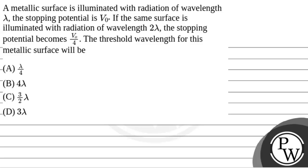Hello, let's read the question. The question says that a metallic surface is illuminated with radiation of wavelength lambda, and the stopping potential is V0. If the same surface is illuminated with radiation of wavelength 2 lambda, the stopping potential becomes V0 by 4. We need to find the threshold wavelength for this metallic surface.